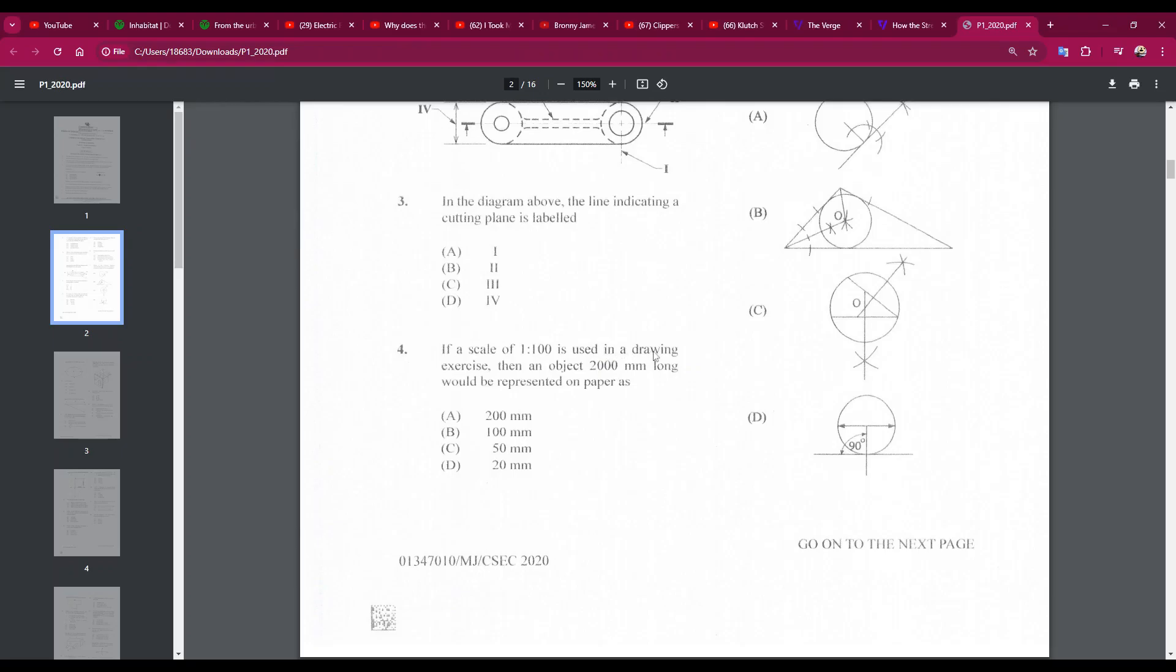Number four: if a scale of one to 100 is used in a drawing exercise, then an object 2000 millimeters long would be represented on paper as... This is ratio, so anything on the paper must be multiplied by 100 in the real world, and anything in the real world must be divided by 100 to be the scale on the paper. So in this case, it's 2000 millimeters long in the real world. If we divide by 100, we'll get 20 millimeters. The answer is D.